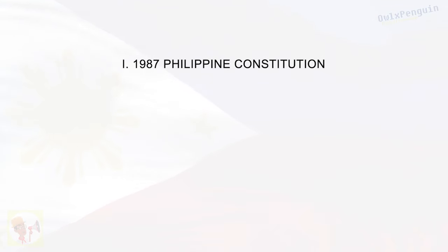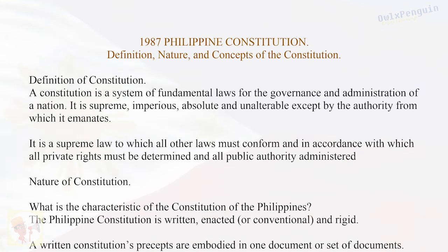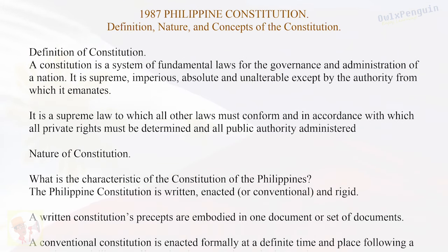1987 Philippine Constitution: Definition, Nature, and Concepts of the Constitution. A Constitution is a system of fundamental laws for the governance and administration of a nation. It is supreme, imperious, absolute, and unalterable except by the authority from which it emanates. It is a supreme law to which all other laws must conform and in accordance with which all private rights must be determined and all public authority administered.